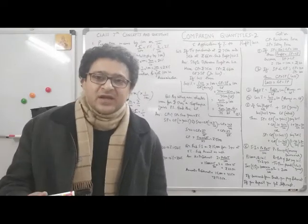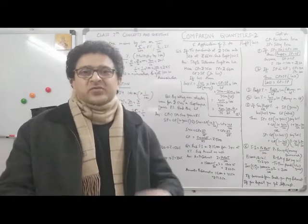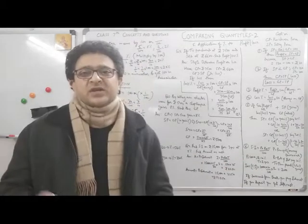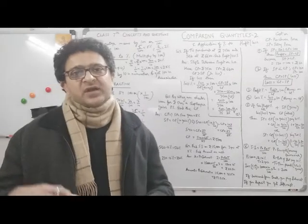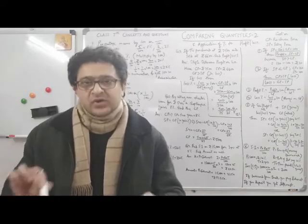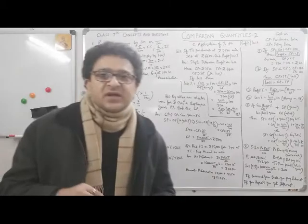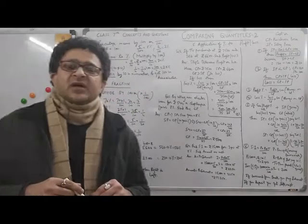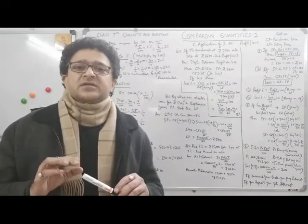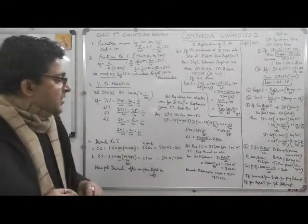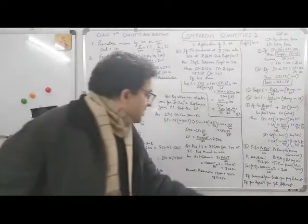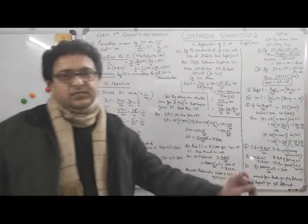The bank gave you the money and you can use it from today, but after 2 years you pay back 1000 + 200 = 1200 rupees, which is called the amount. Amount = Principal + Interest. If you deposit in a bank, you receive interest. If you borrow from the bank, you pay interest. That is the simple essence.